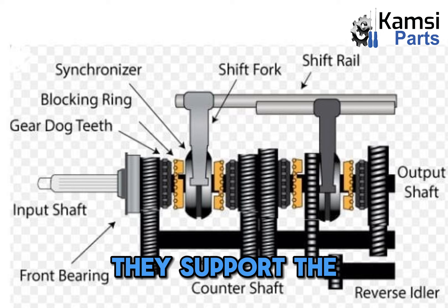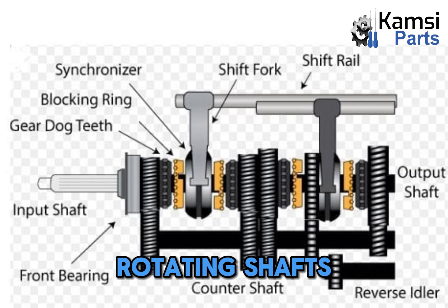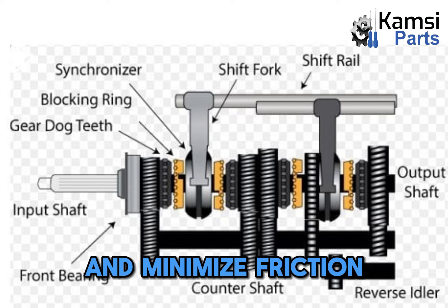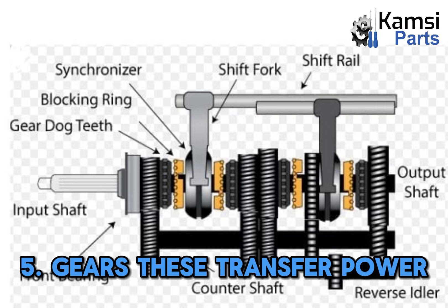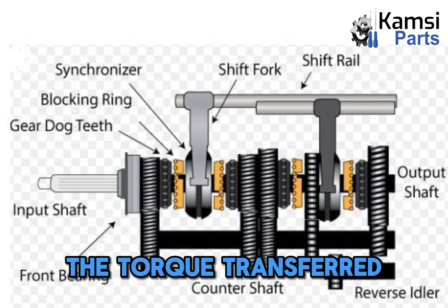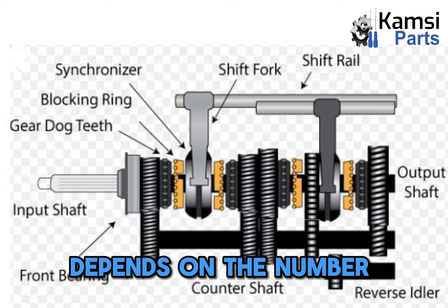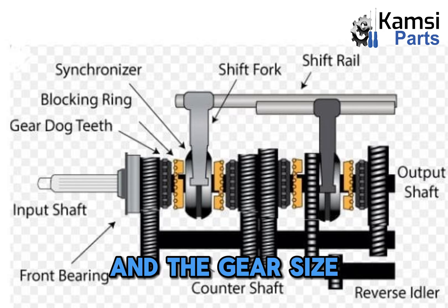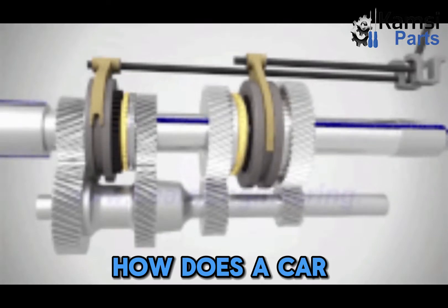4. Bearings: they support the rotating shafts and minimize friction. 5. Gears: these transfer power from one shaft to another. The torque transferred through the gears depends on the number of ridges and teeth and the gear size.